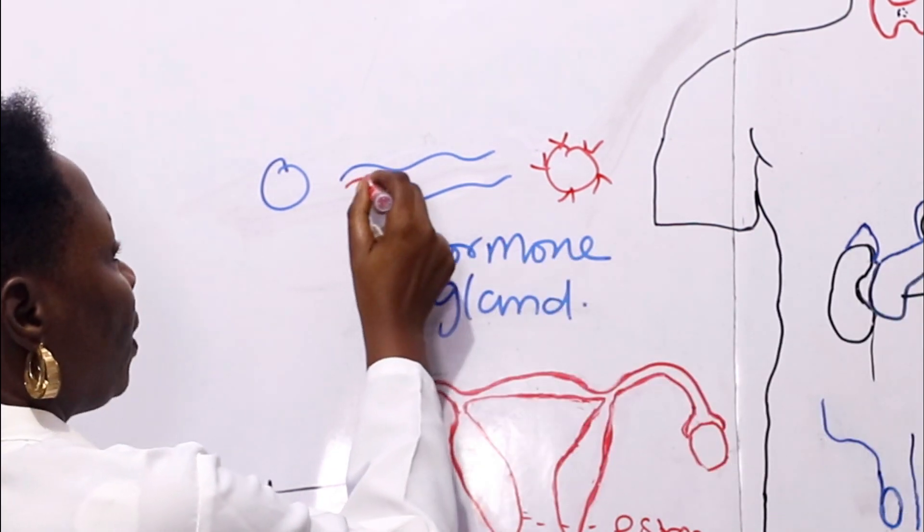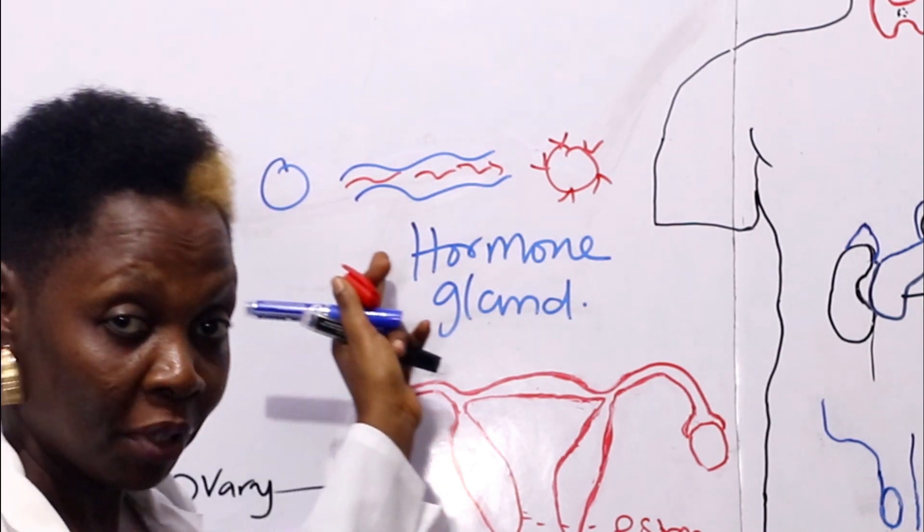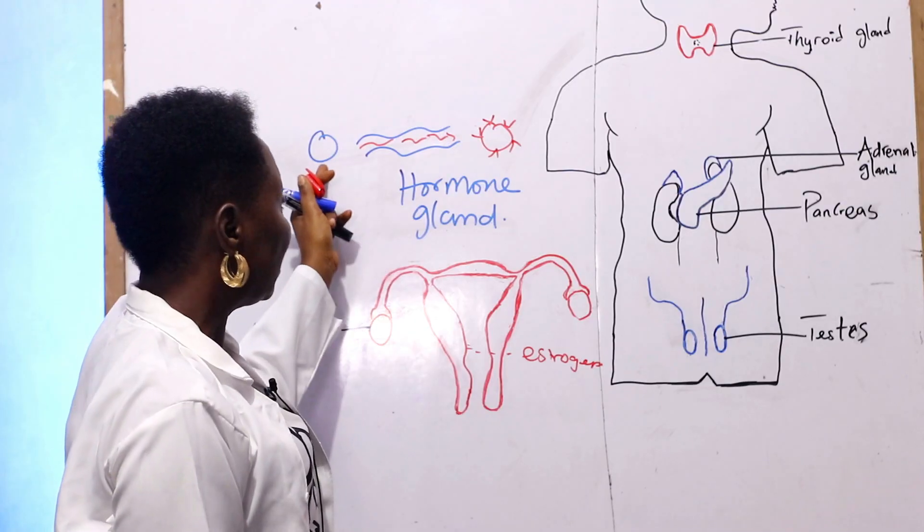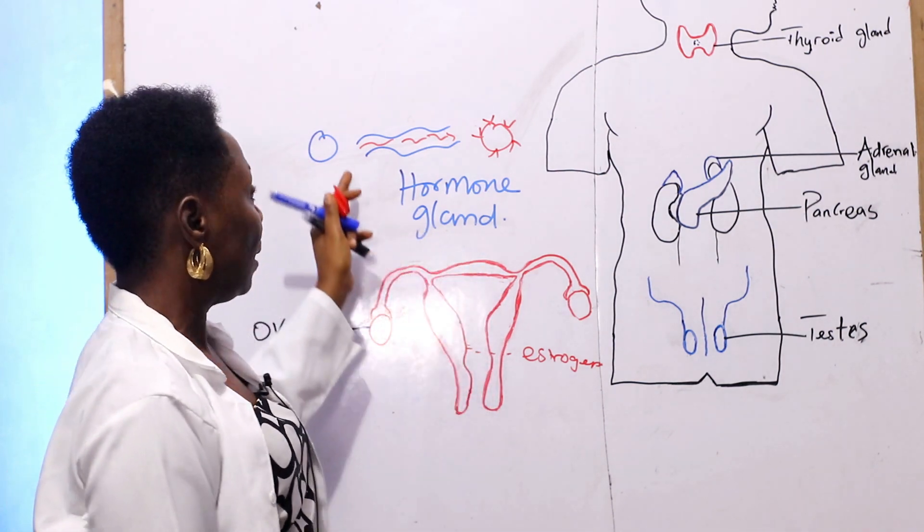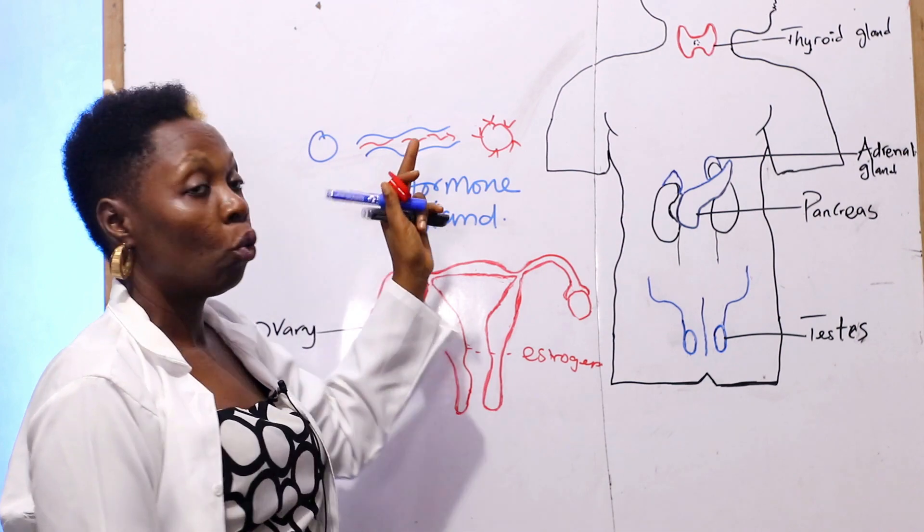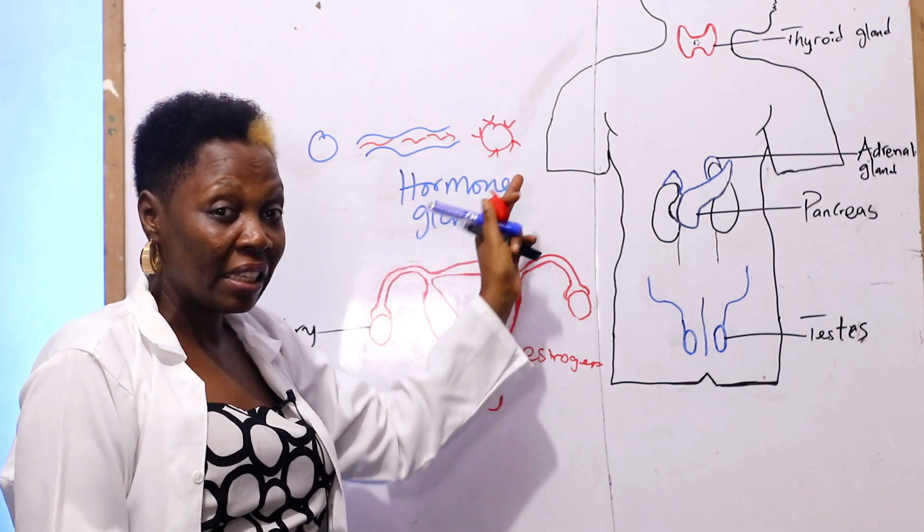So the target means of transport is the blood, and the biochemical substance which is a hormone is synthesized by the organ called the gland. The gland is specific to synthesizing hormones that are target specific.